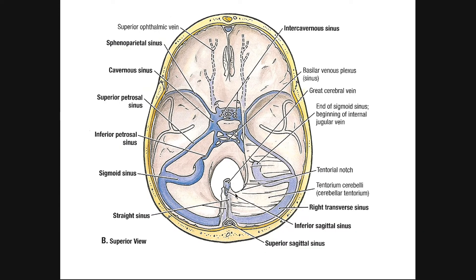Looking at a transverse cross-section view, here is the superior sagittal sinus. Following it inferiorly, it drains into the transverse sinus — here's the right half and the left half of the transverse sinus. And then this would be the sigmoid sinus: the left sigmoid sinus and the right sigmoid sinus.